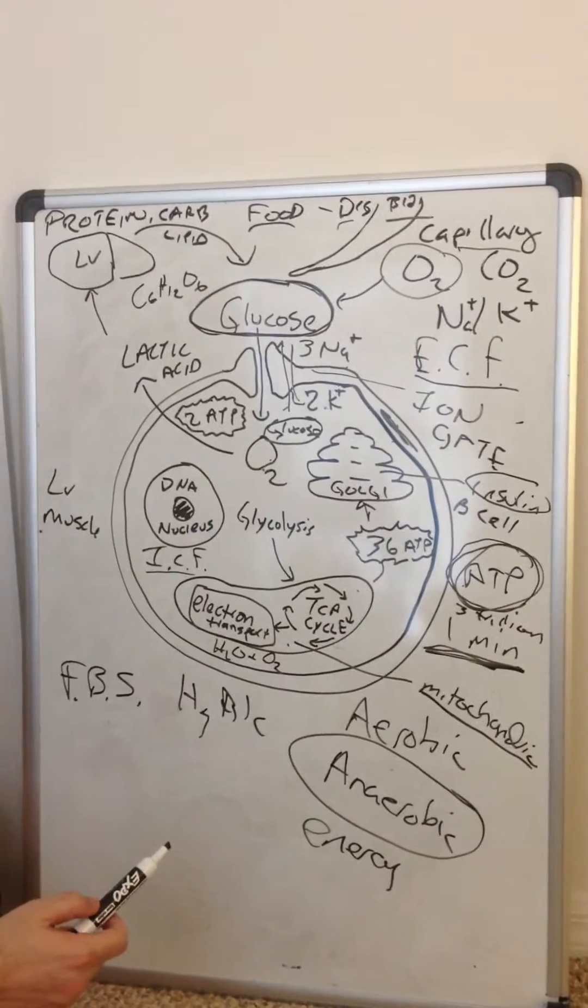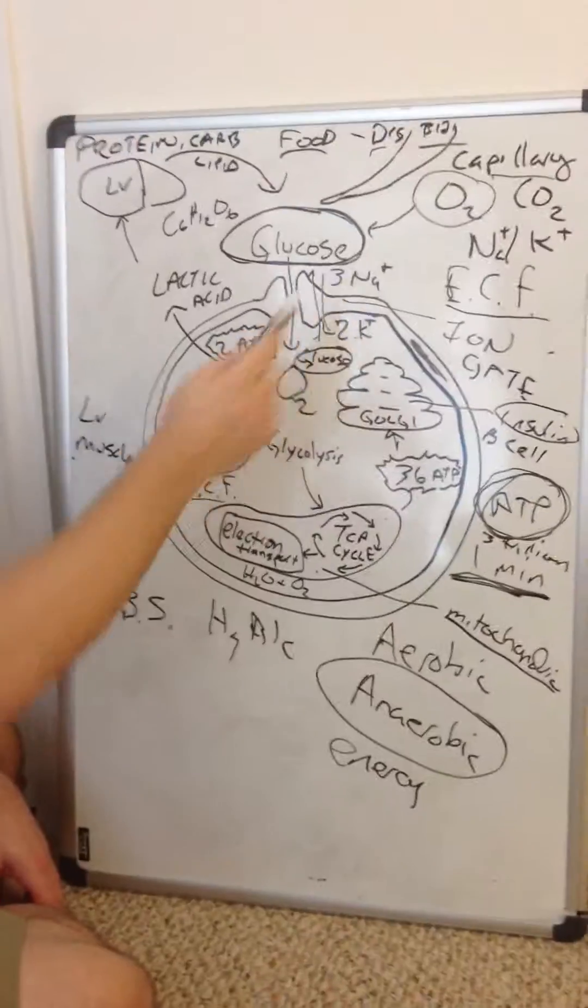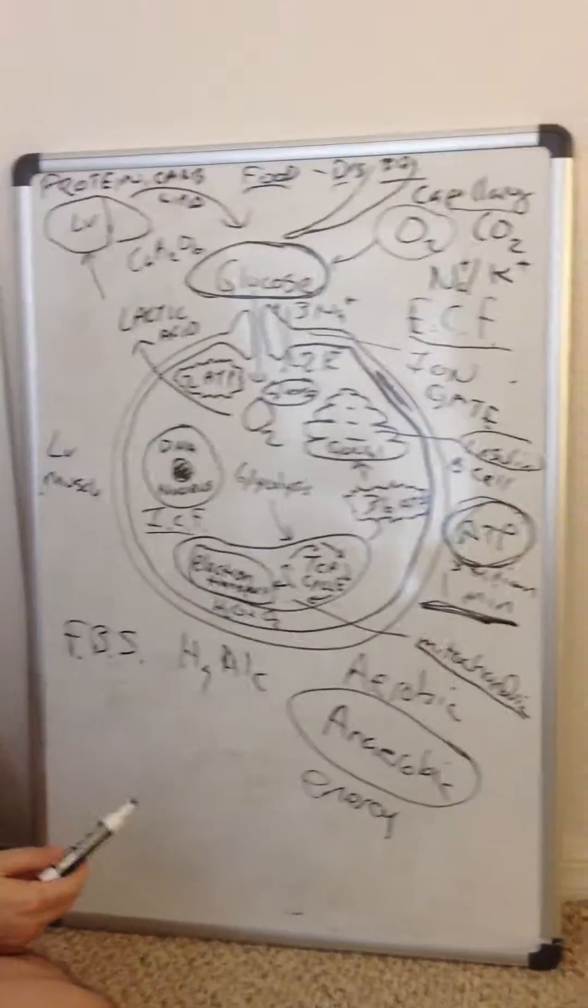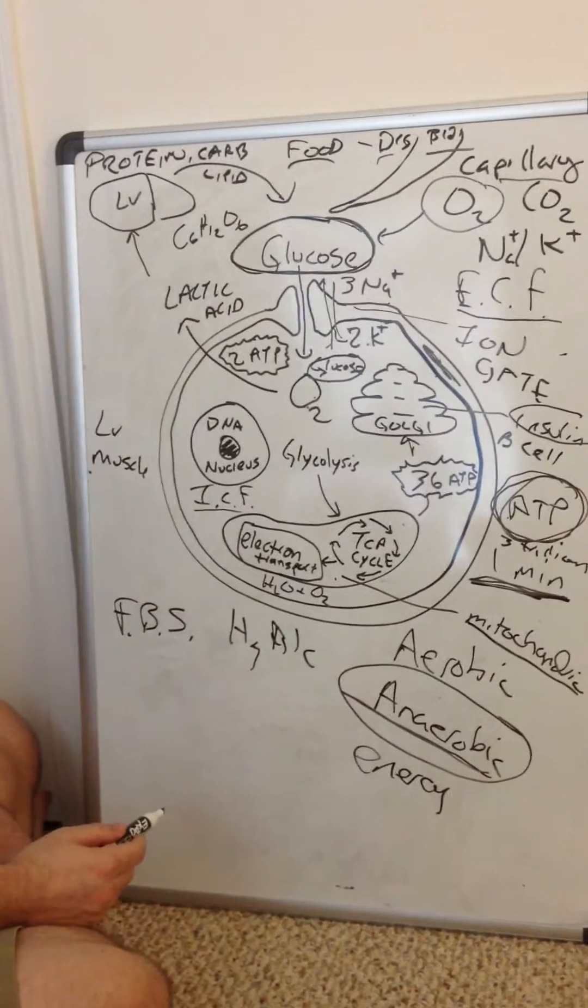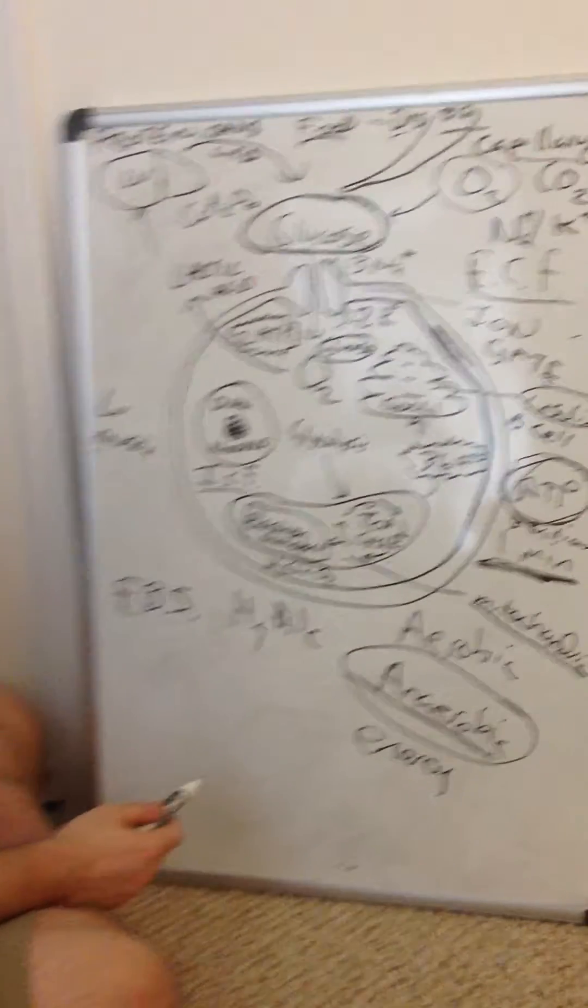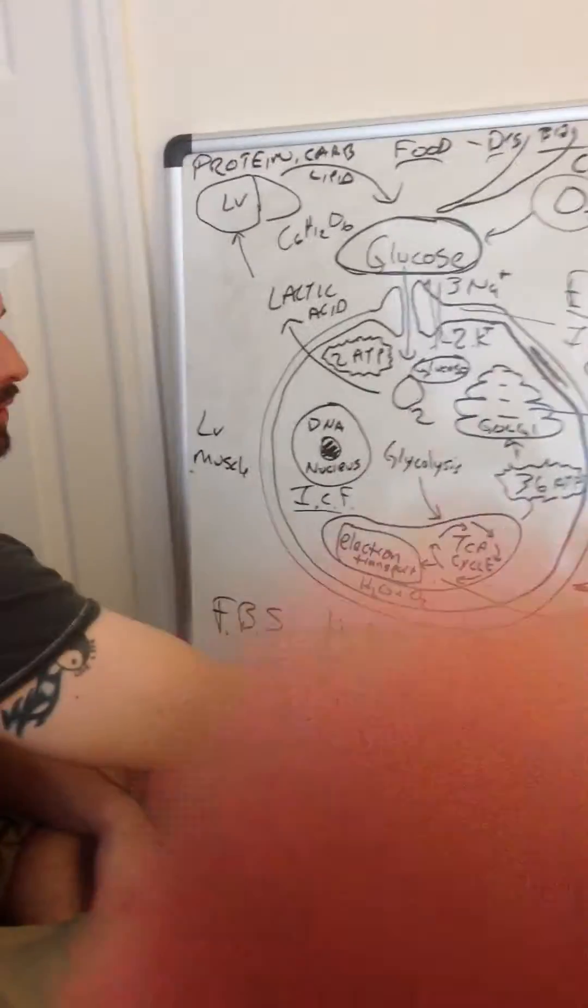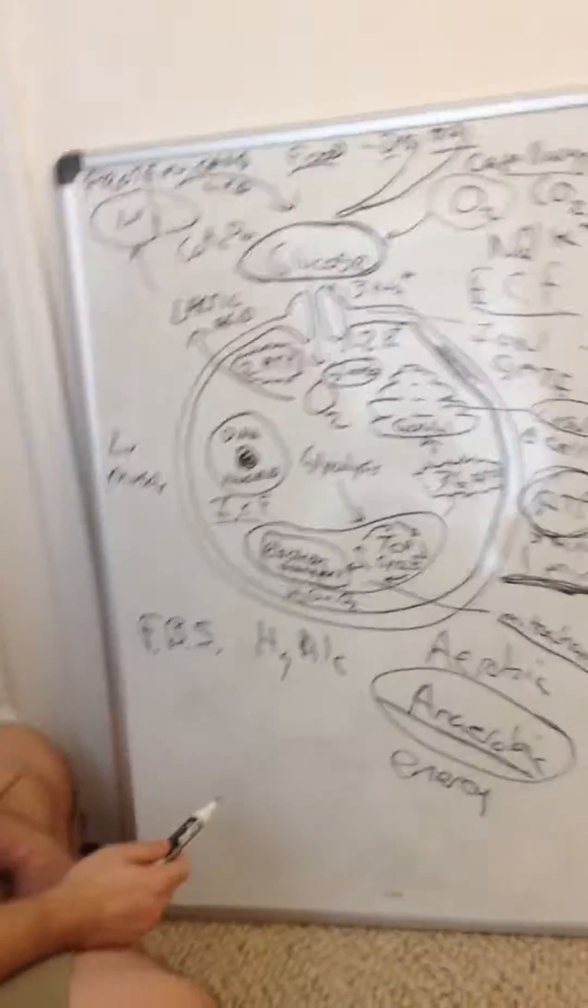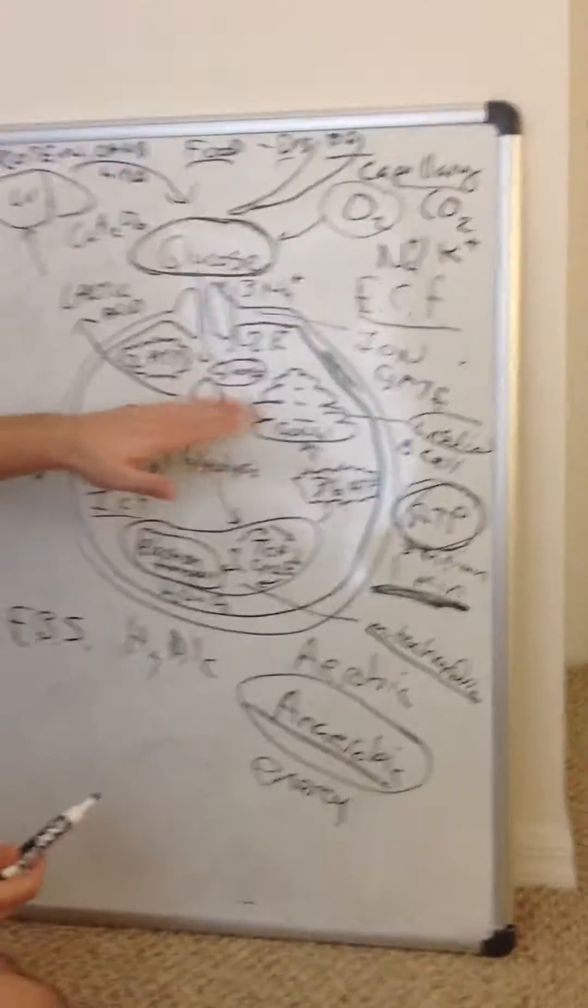How does this all happen? The glucose molecule again comes inside the cell wall through the ion gate exchange. The glucose is then determined. Do we have oxygen? If we do not have oxygen, this is called an anaerobic process. We still have to make energy. We can't wait on the oxygen. The cell needs to continue to survive. It has no energy to survive and continue to respirate and move, produce.